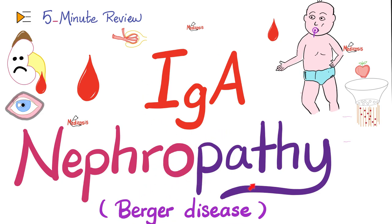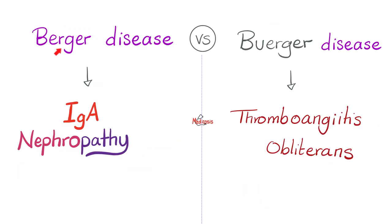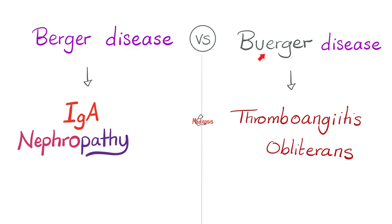You will also find this video in my nephrology playlist. Be very careful of how the disease is spelled. Berger is not the same as Buerger. The former is IgA nephropathy; the latter is thromboangiitis obliterans. Those are two different diseases — the difference is just one letter. As they say, medical textbooks are the only books that can kill you because of a typo.